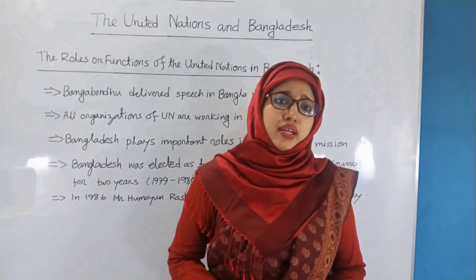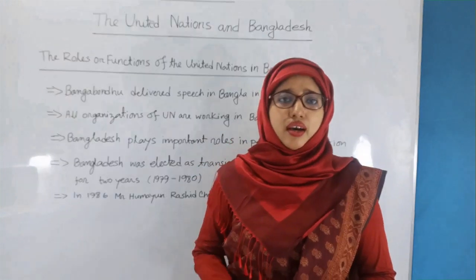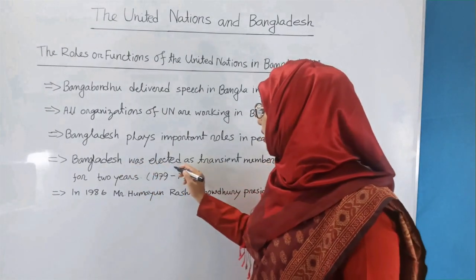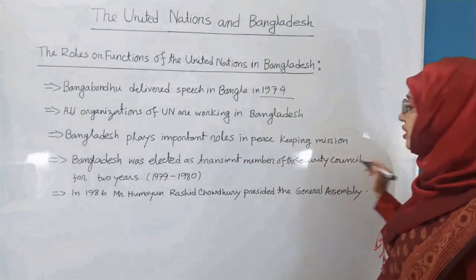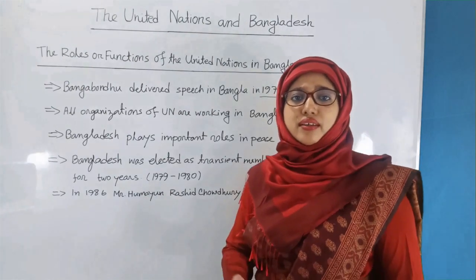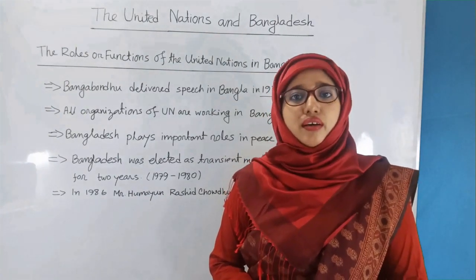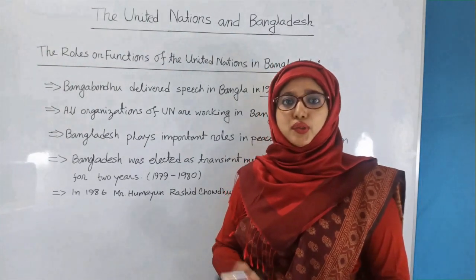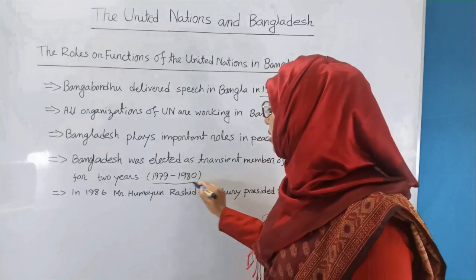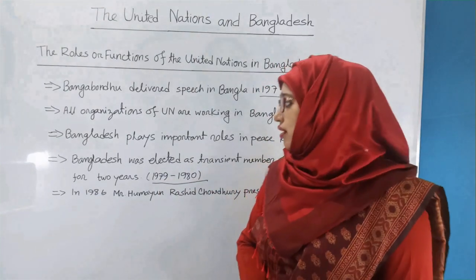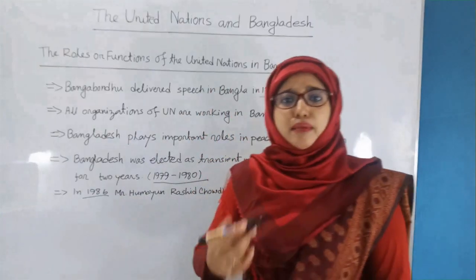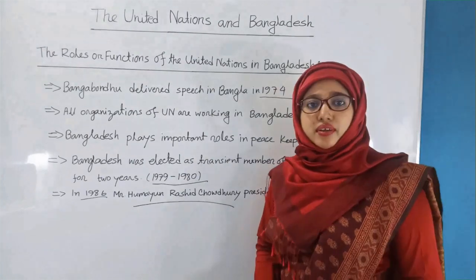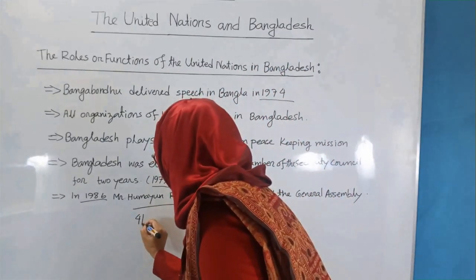Besides, after becoming a member state of the United Nations, Bangladesh has been playing an important role in this international organization. Bangladesh was elected as a non-permanent member of the Security Council for two years — from 1979 to 1980. You know that there are ten non-permanent members of the Security Council, elected for two years. And in 1986, our Foreign Minister Mr. Humayun Rashid Choudhury presided over the General Assembly — that was the forty-first session.